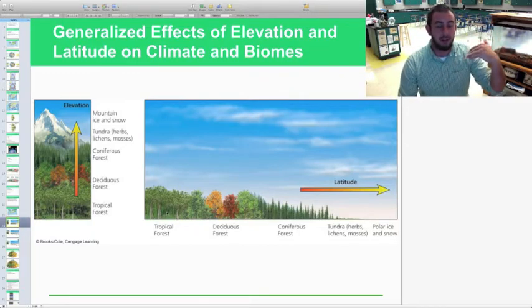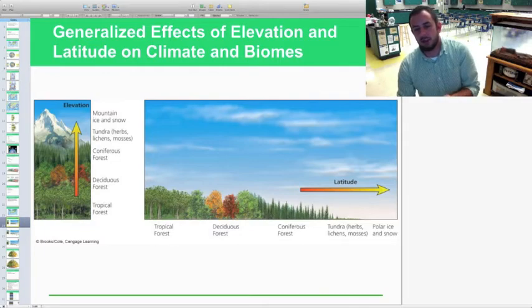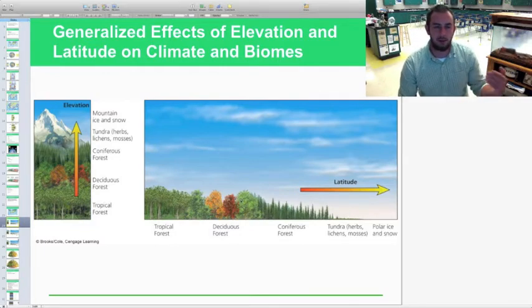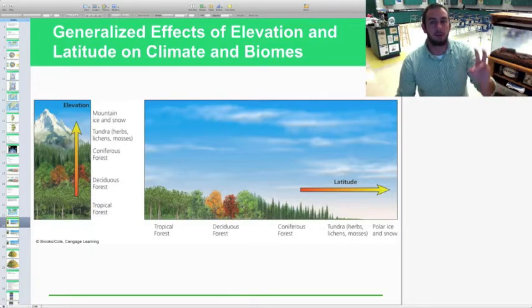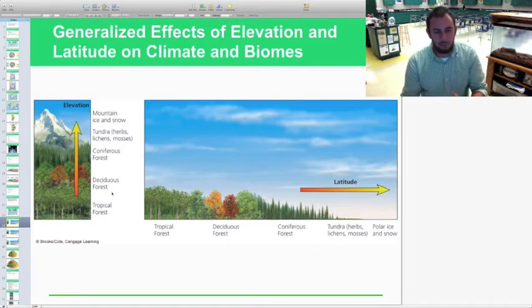As you go in latitude away from the equator, which is where tropical forests are located at the equator, moving away from the equator you have deciduous forests, coniferous forests, tundra, and polar ice, and depending on where you're located in your convection cell, could have some deserts in there as well or grasslands, so just taking a look at some of those general effects of latitude and how that shapes biomes.